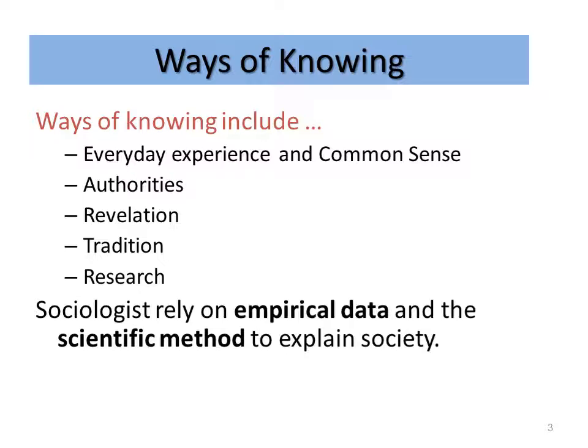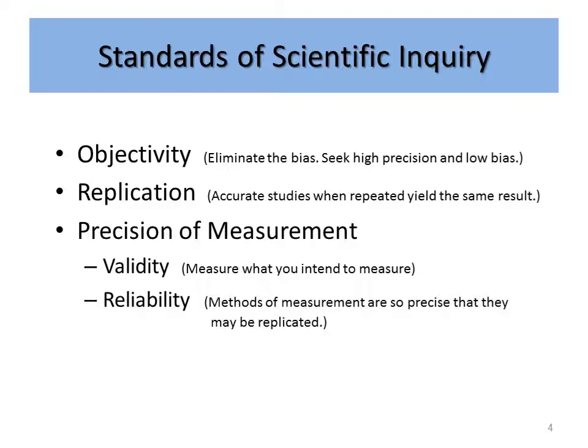Sociologists rely upon empirical data. Empirical means that it can be measured, and they use the scientific method to explain society. In their effort to explain society accurately, sociologists seek to be objective — that is, they want to eliminate bias. Whatever the opinion of the researcher, the researcher does not want to force his or her opinion on the research study. So researchers seek high precision and low bias.